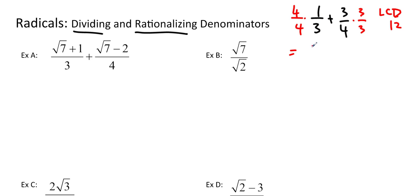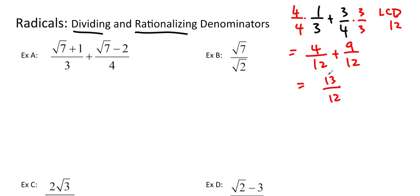So 4 times 1 is 4, over 4 times 3 is 12, plus 3 times 3 is 9, over 12. And that gives us 4 plus 9, which is 13, over 12. And we leave that 12 alone. It's an improper fraction, and that's the way I like them. Please don't change it to mixed numbers, because I will take marks off. Leave it as an improper fraction. And if I could simplify it, I would, but I can't, so I won't.